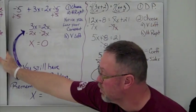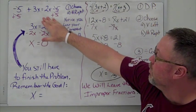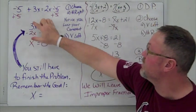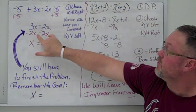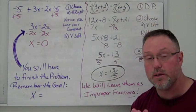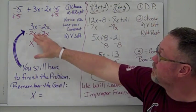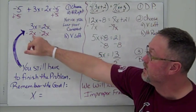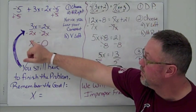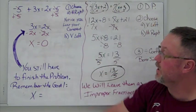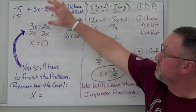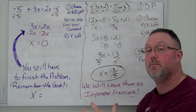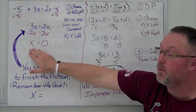In this example, we choose to move the number to the right, but notice that you lose your constant, leaving 3x = 2x. You still have to finish the problem — move the variable term (negative 2x) to the left using the opposite operation. That gives x = 0, which is our answer. Even when you have variables on both sides, you must get all letters on one side and numbers on the other. The goal is always x by itself.